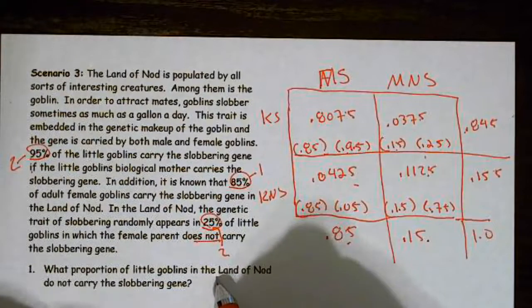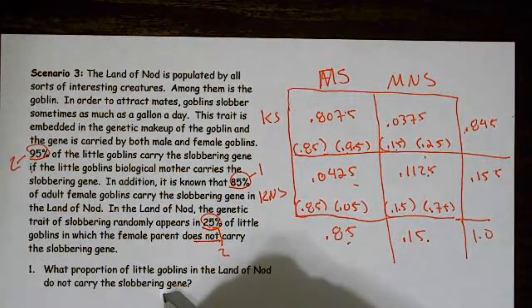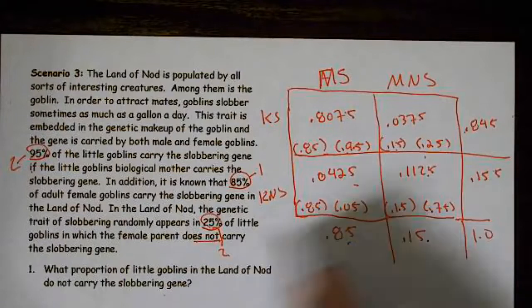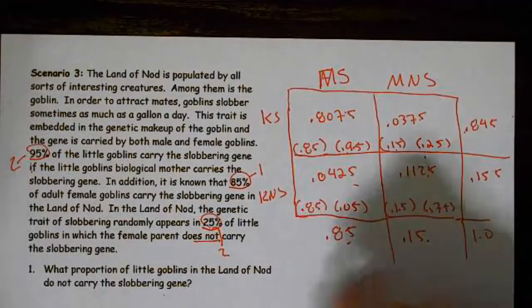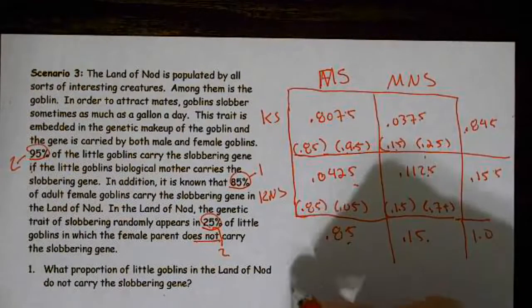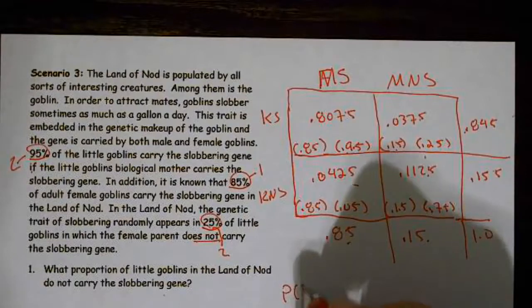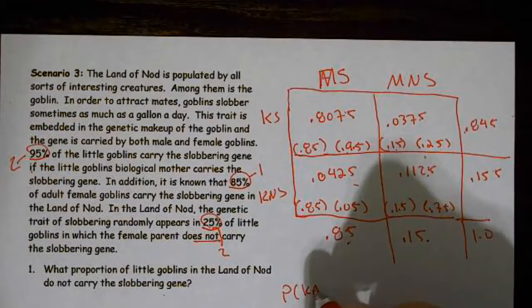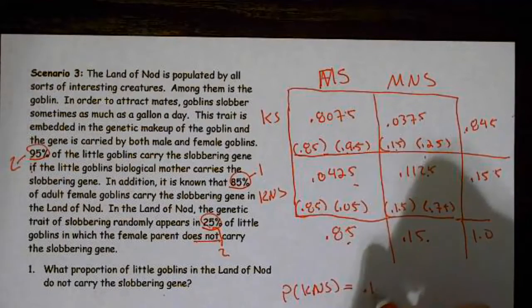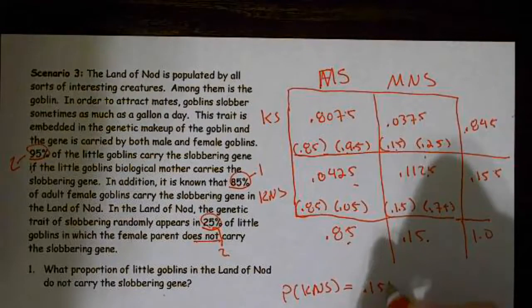What proportion of little goblins in the land of Nod do not carry the slobbering gene? Kid not slobbering = 0.155 right there. Probability that the kid is not slobbering equals 0.155.